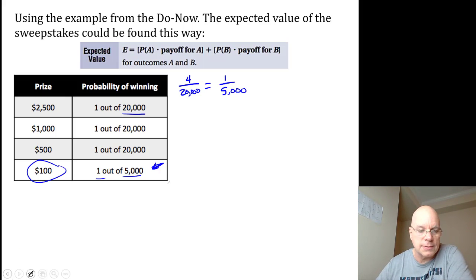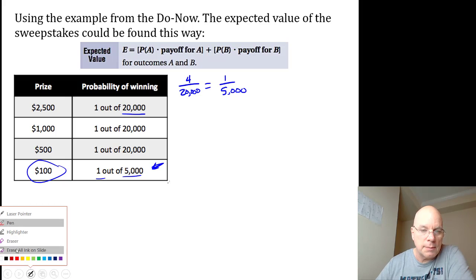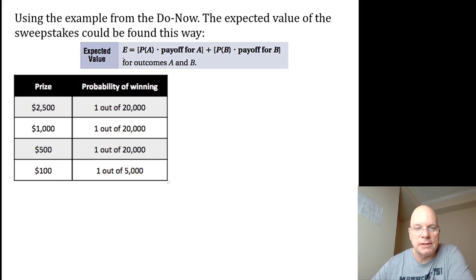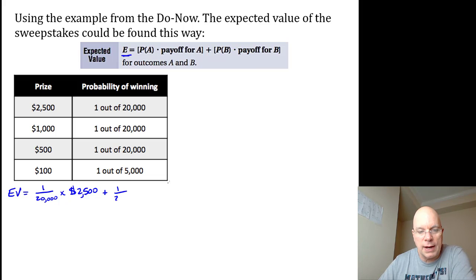If you're doing an expected value computation, the expected value E or EV is equal to the probability of the first thing happening, the first event, a 1 out of 20,000 probability, multiplied by the value of that event, $2,500.